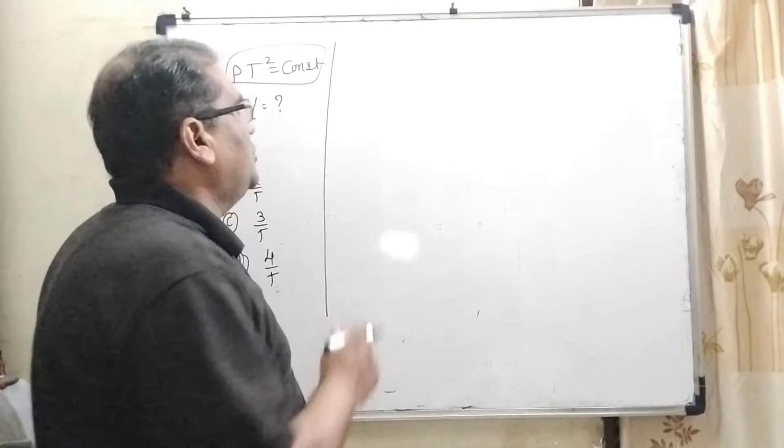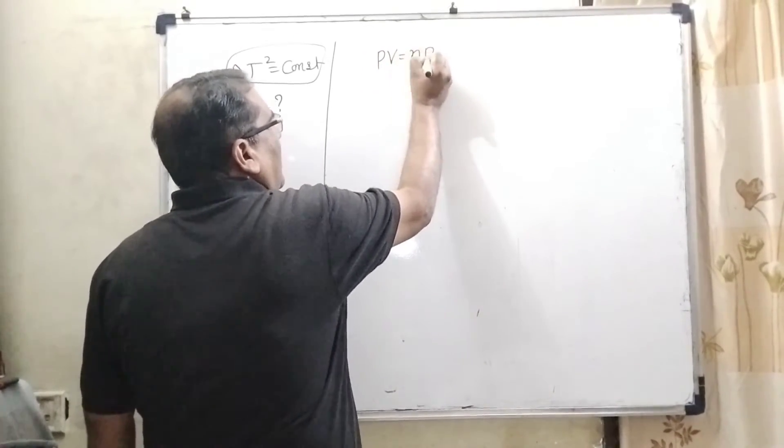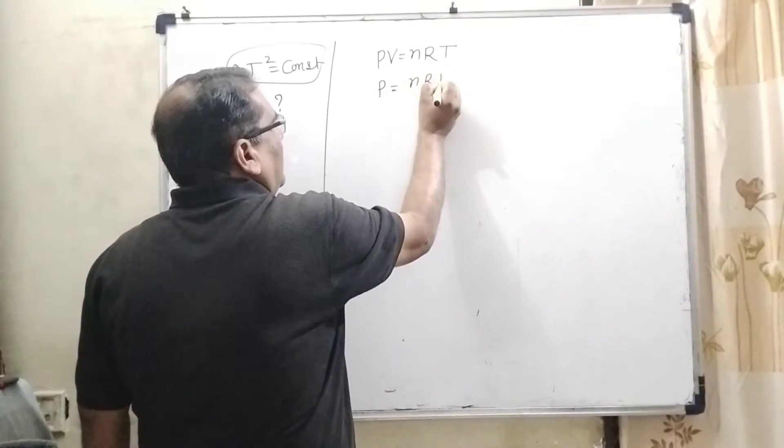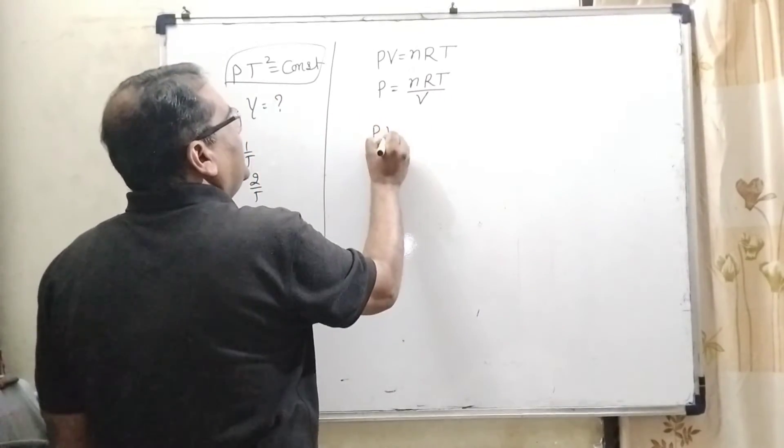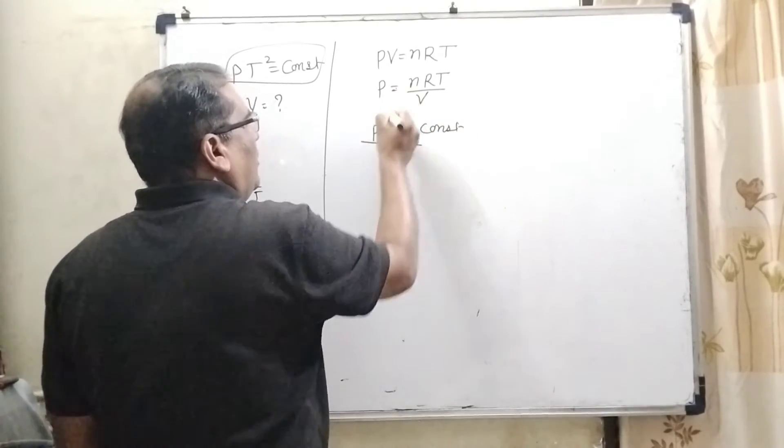To solve this question, we are using ideal gas equation PV = nRT. P can be written as nRT/V. We have given the condition Pt² = constant. Now substitute this value of P.